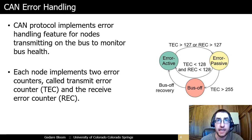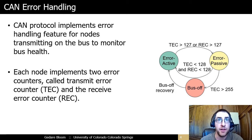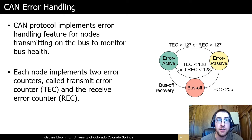In the error-active state, a node transmits an active error flag, which consists of six dominant bits that will interrupt the current transmission. When a node's REC or TEC exceed 127, it enters the error-passive state, and on an error, transmits passive error flags that consist of six recessive bits, which will not interrupt transmission by other nodes. If a node's TEC goes above 255, the node enters the bus-off state and is unable to transmit to the bus.